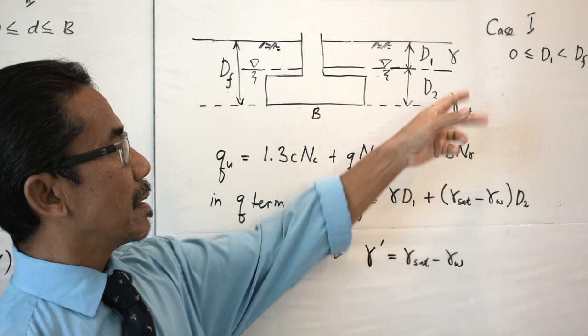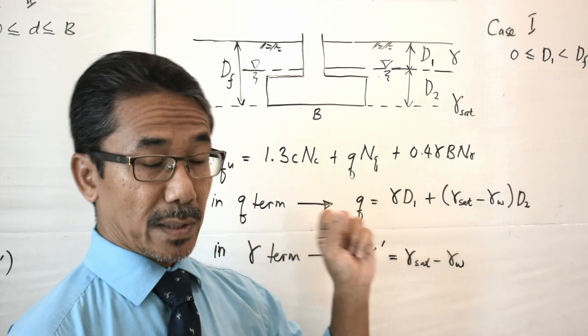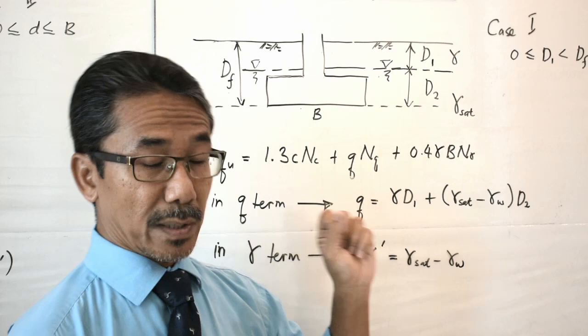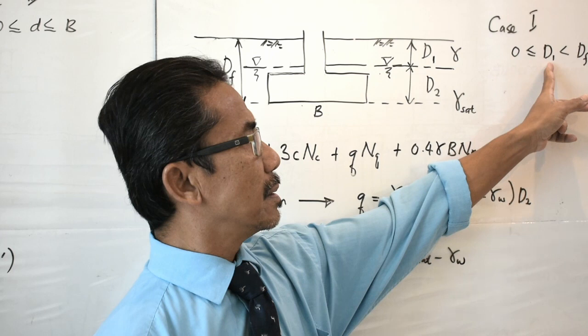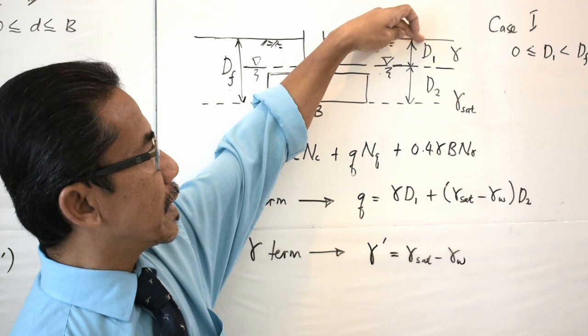In this case, the unit weight of the soil above the groundwater table is indicated as gamma, whereas for the unit weight of soil below the groundwater table it is indicated as gamma sat, or saturated unit weight. This is known as case 1, where the location of the groundwater table satisfies d sub 1 greater than or equal to 0 and d sub 1 less than df.